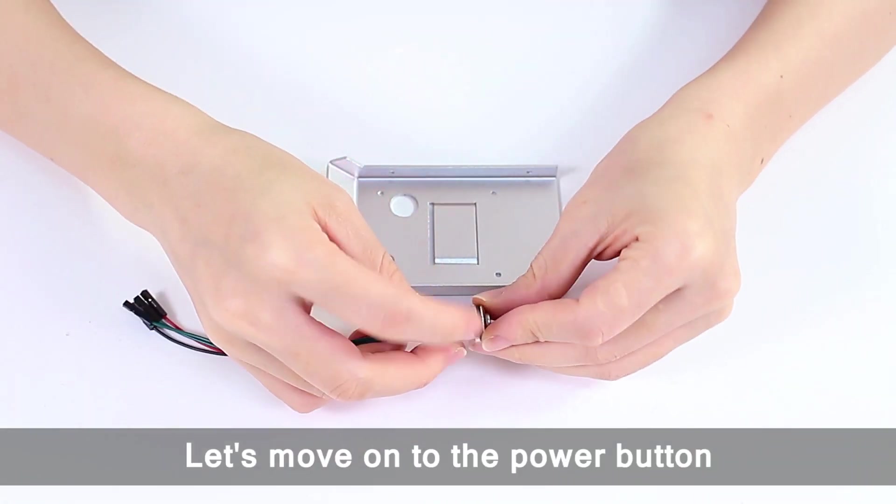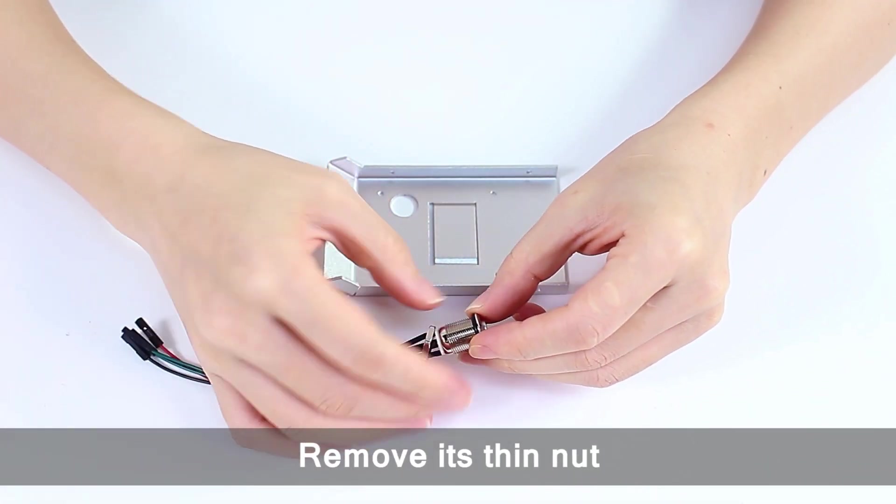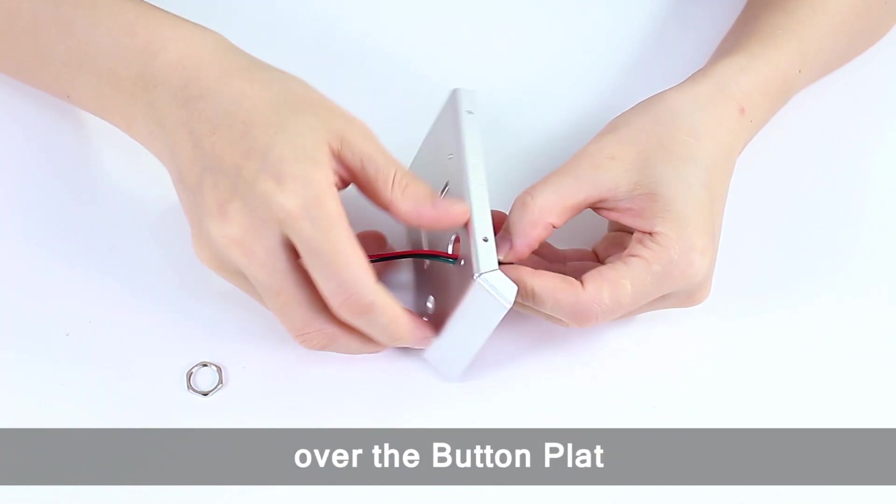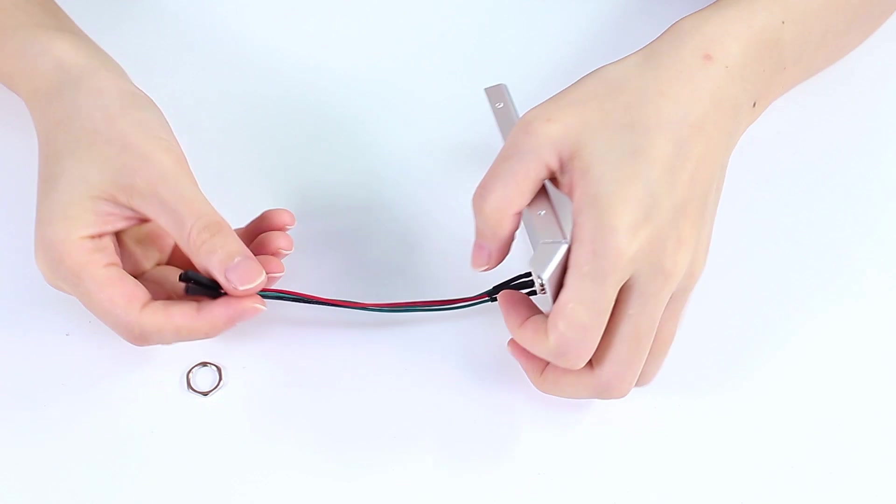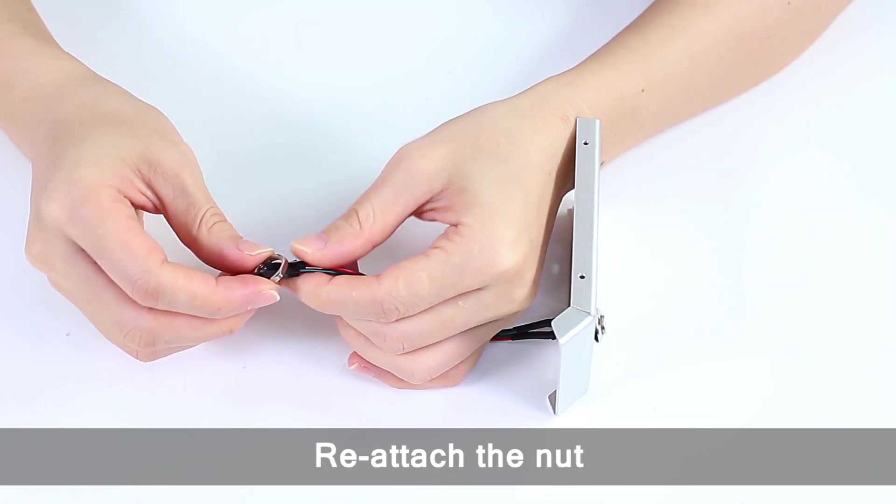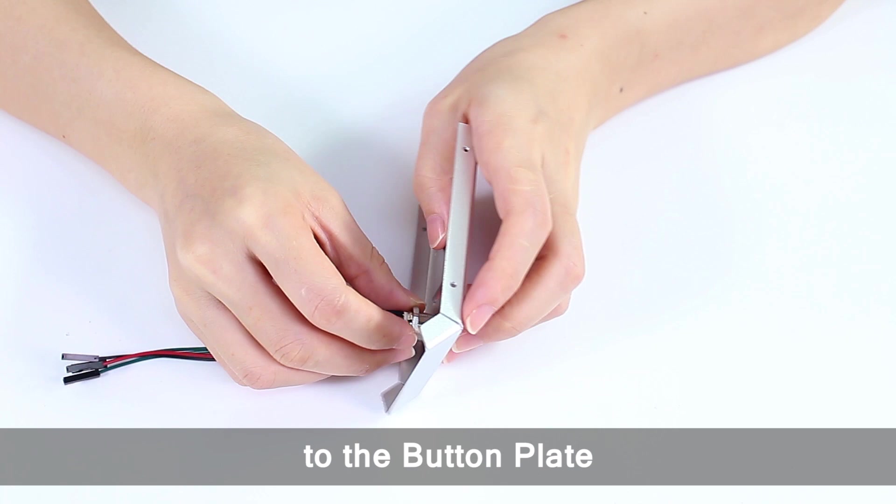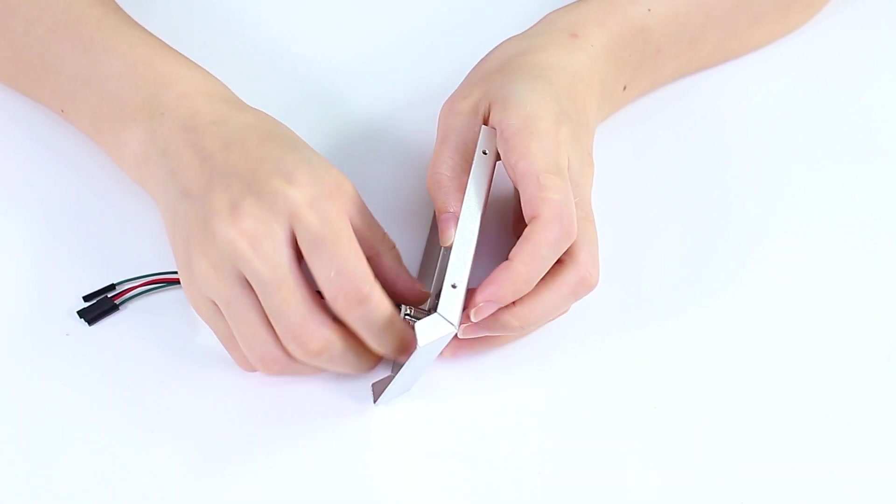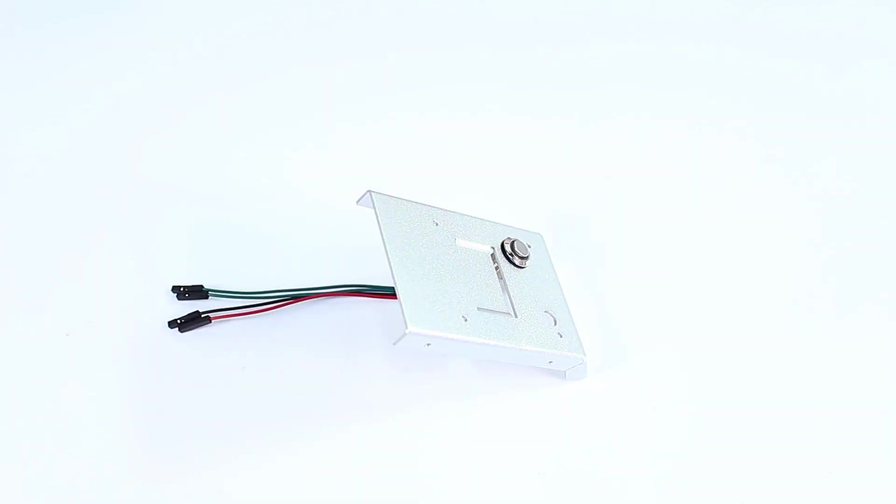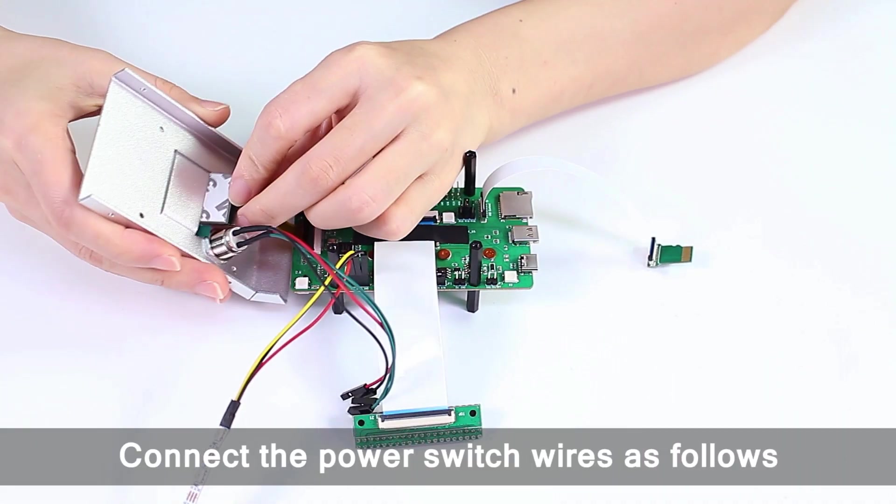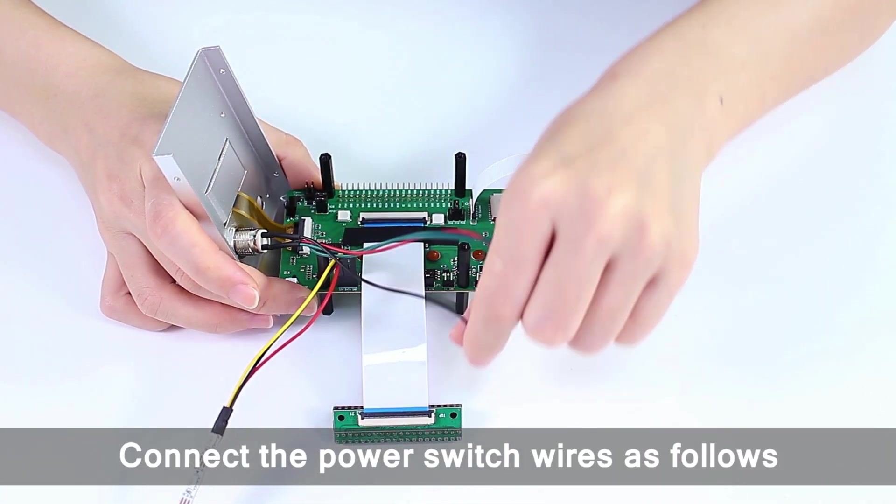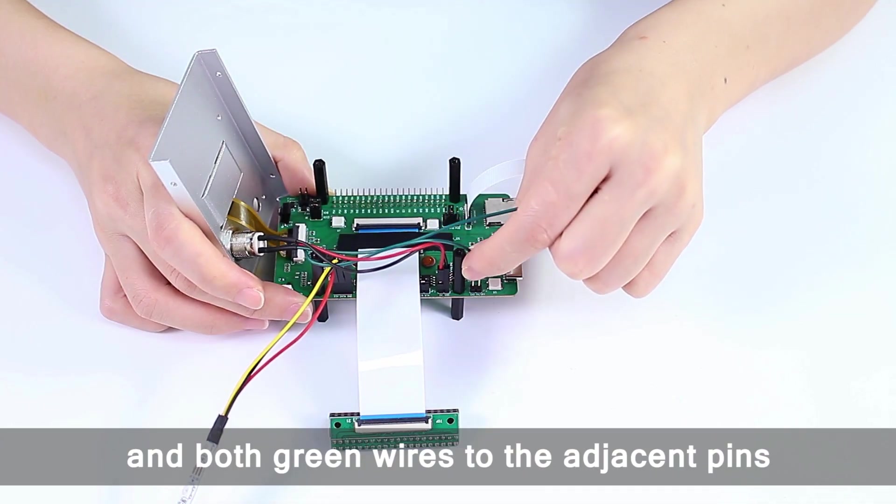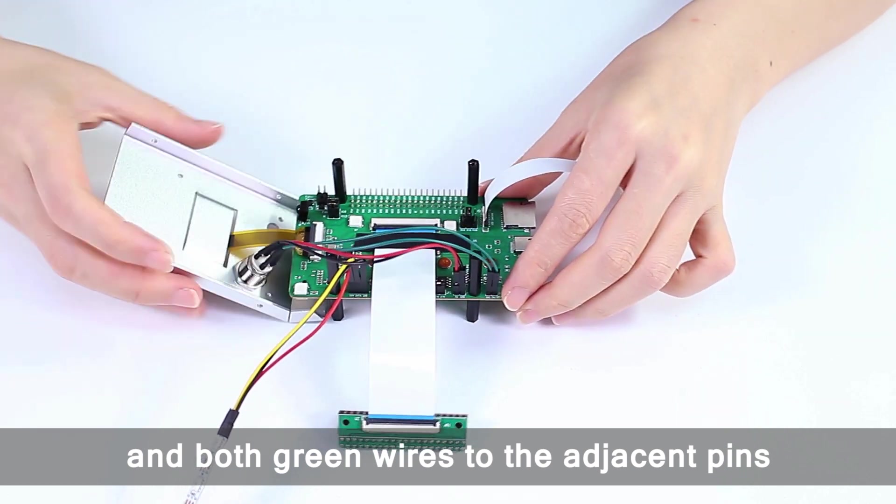Let's move on to the power button. Remove its thin nut, guiding the button's wire over the button plate. Reattach the nut, securing the power button to the button plate. Connect the power switch wires as follows: black to GND, red to 5 volts, and both green wires to the adjacent pins.